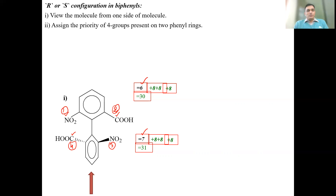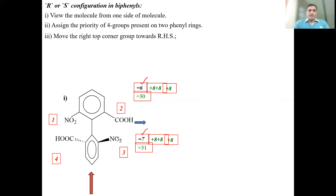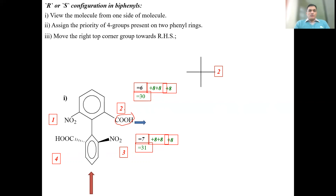Now draw a cross — Fischer projection form. Move the right-top corner group (COH, priority 2) towards the right-hand side. Then move the right-bottom corner group (priority 3) towards the bottom in the Fischer projection. Then move the left-bottom corner group (CH, priority 4) towards the left-hand side. Finally, move the left-top corner group (NO2, priority 1) towards the top. Priority 2 goes right, priority 3 goes bottom, priority 4 goes left, priority 1 goes top.